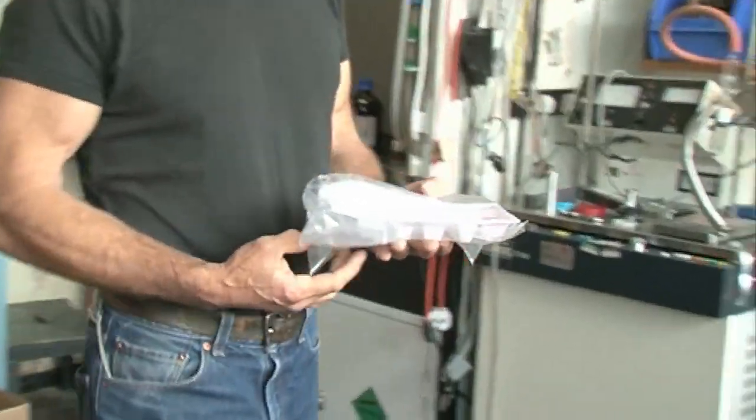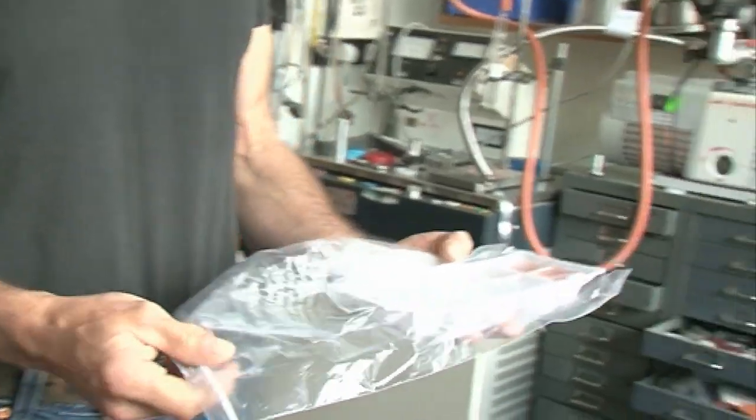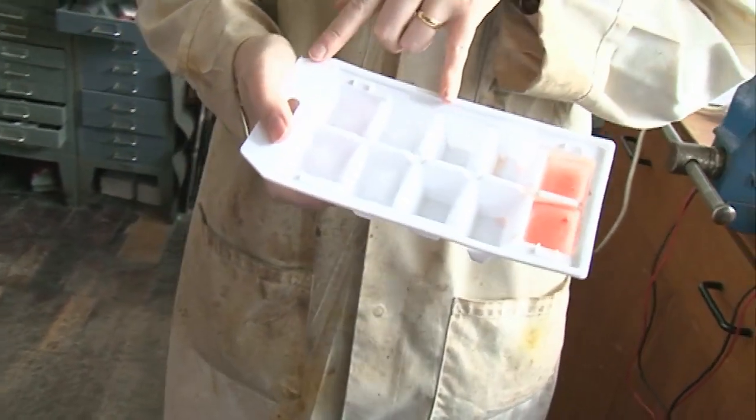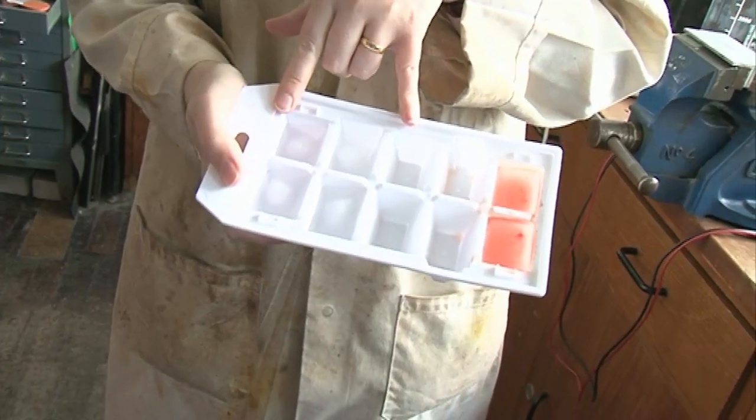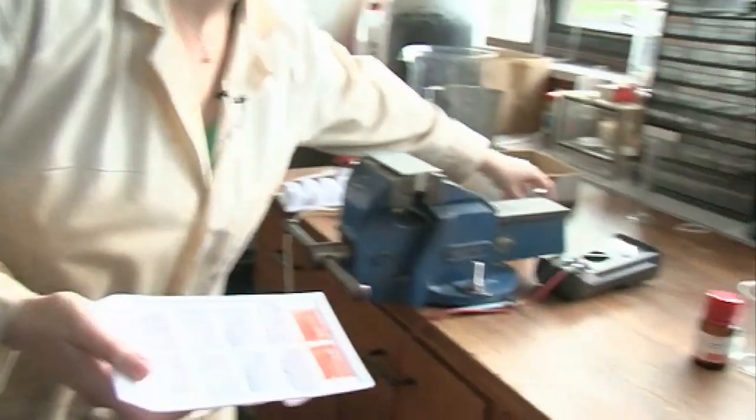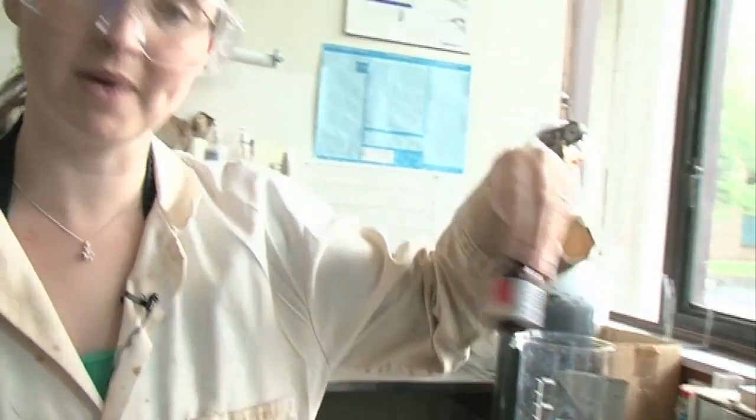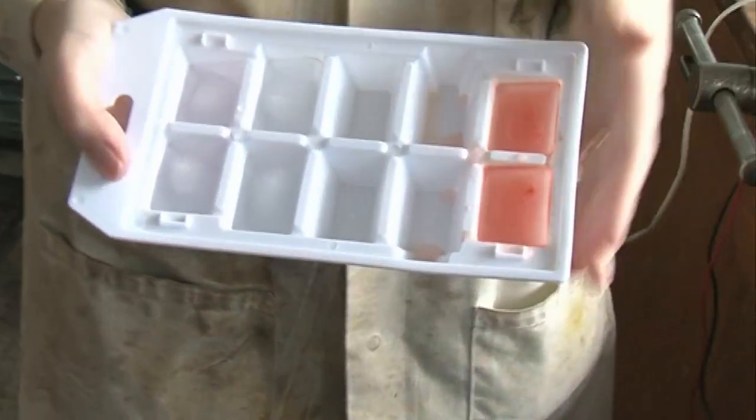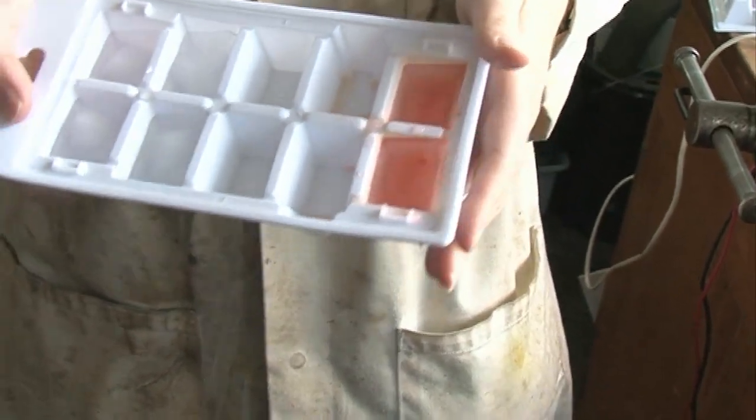So what we did was we made some ice cubes with the degassed water. These are the water ice cubes, the colorless ones. And what we did with the D2O ones, just so we could see the difference, is we put a little tiny bit of food coloring, only a small amount so it shouldn't affect the experiment at all, but it's just so we can see the difference.